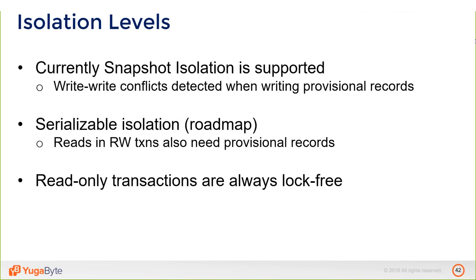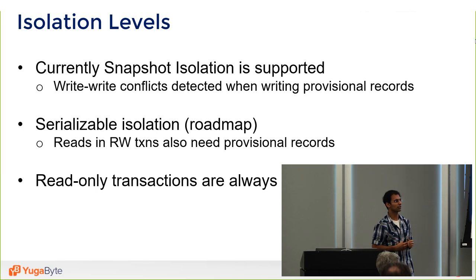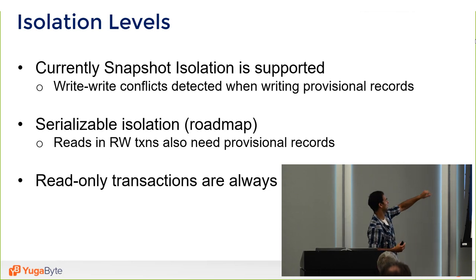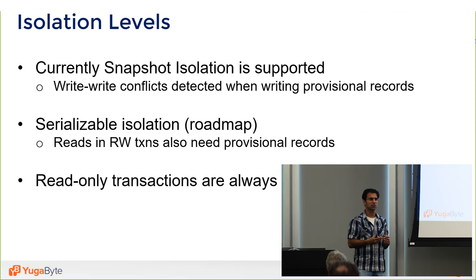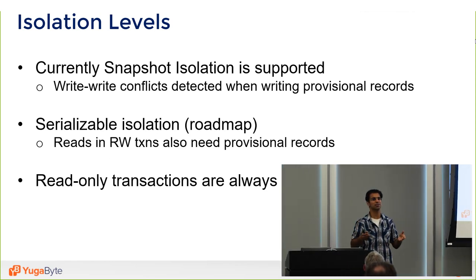On isolation levels: YugaByte currently implements snapshot isolation, which we believe is the right level — giving maximum performance for implementing secondary indexes and detecting write-write conflicts. Serializable isolation, which handles read-write conflicts, is something we will work on and implement. Most importantly: read-only transactions are lock-free and very fast. That's typically what people want — consistency on writes and speed on reads.